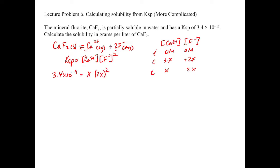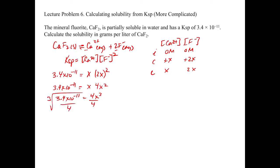Plugging in, we get X times (2X) squared. Be careful here: when you square 2X, you have to square both the 2 and the X, giving 4X squared times X, which equals 3.4 times 10 to the minus 11. Combining those gives 4X cubed equals 3.4 times 10 to the minus 11. Dividing both sides by 4 and then taking the cube root, X equals 2.4 times 10 to the minus 4 molar.